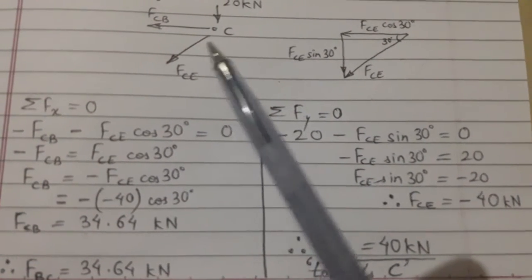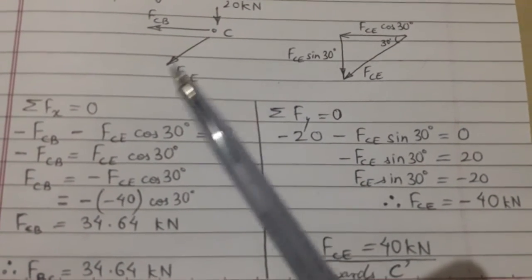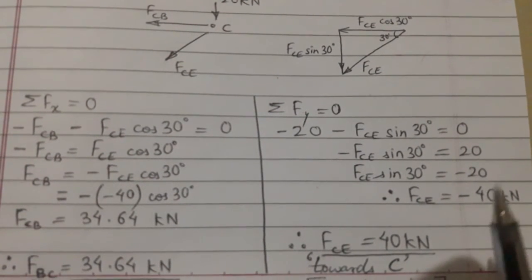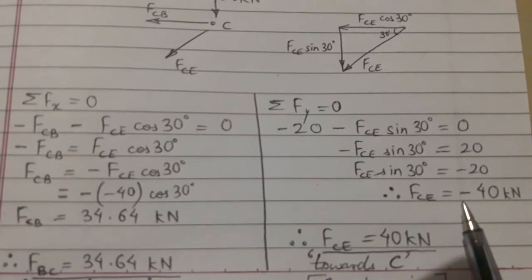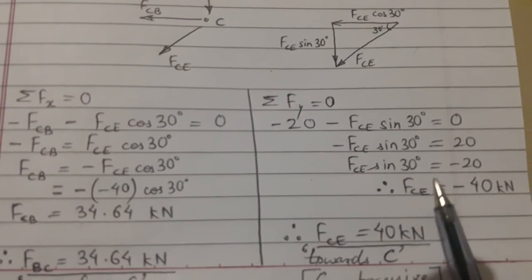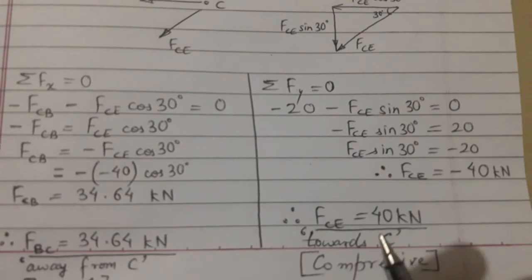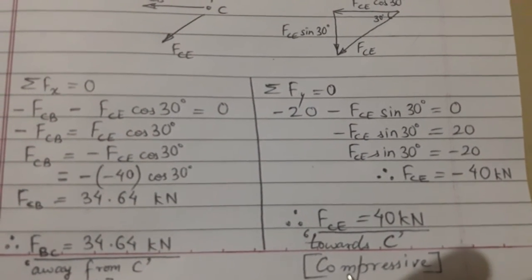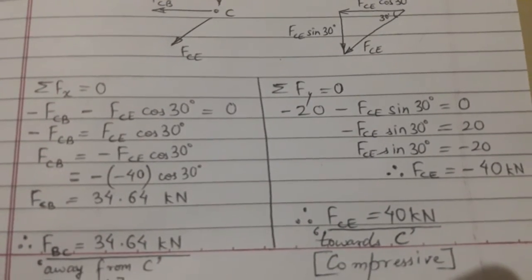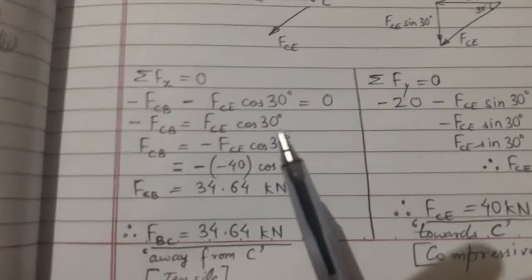So it is not away from the point, it is towards the point. But we will everywhere use the value minus 40 because we followed the same convention. But as we know that the force is towards the point, that's why the nature of force is compressive.